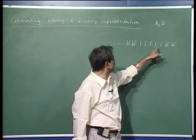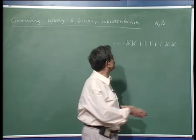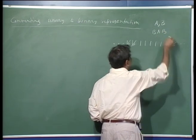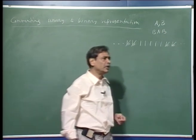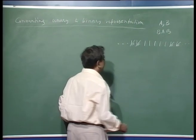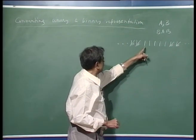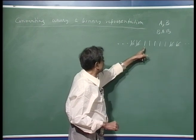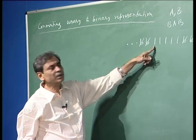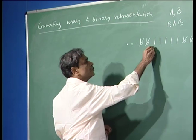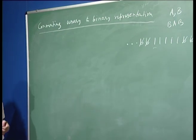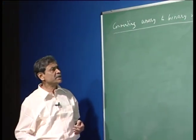So, this is 5 and therefore what we should get here is b a b, which is 101, which is the binary representation of this unary number. What we will do is we have the convention that our Turing machine will start at the leftmost 1 of the input string. So, the Turing machine will start here scanning this particular symbol. Let us see how we can carry out the strategy by means of a Turing machine.